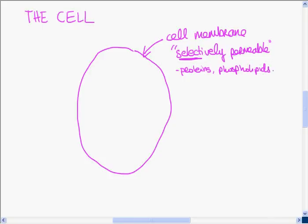The next thing inside the cell is a nucleus. The nucleus is the control center of the cell. So there's the nucleus, it's the control center.